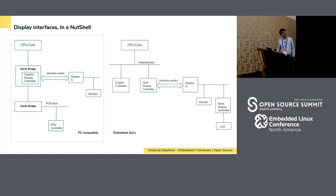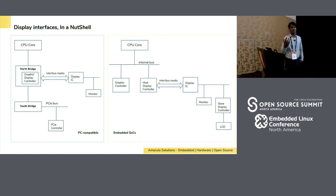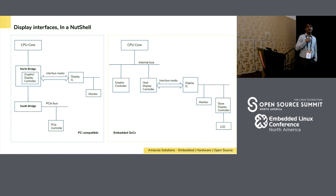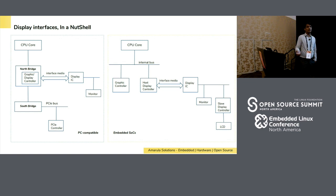When we go with embedded systems, we have something like an internal bus — AXI or AXI2 — and we have a host display controller that interfaces with the display IC. That display IC can be a monitor or a panel with some vendor panel controller on it. The connection between the display IC and the host display controller is an interface that has specifications tailored to meet embedded requirements.